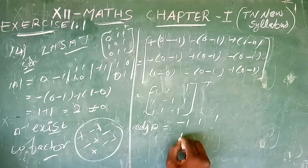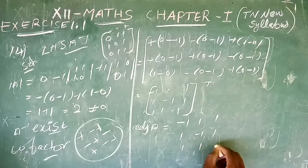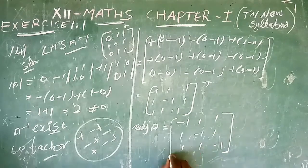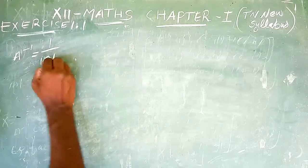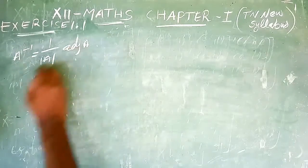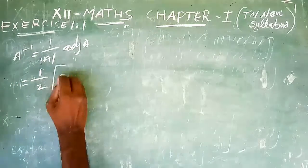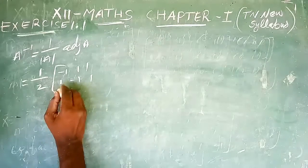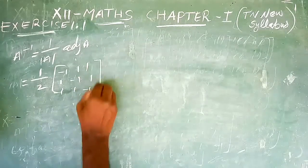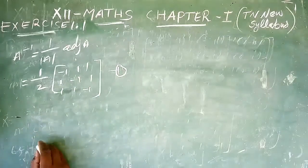In the next step, the adjoint converts rows to columns. Using the formula A inverse equals 1 over the determinant times the adjoint. The determinant is 2, so this gives the left-hand side value.